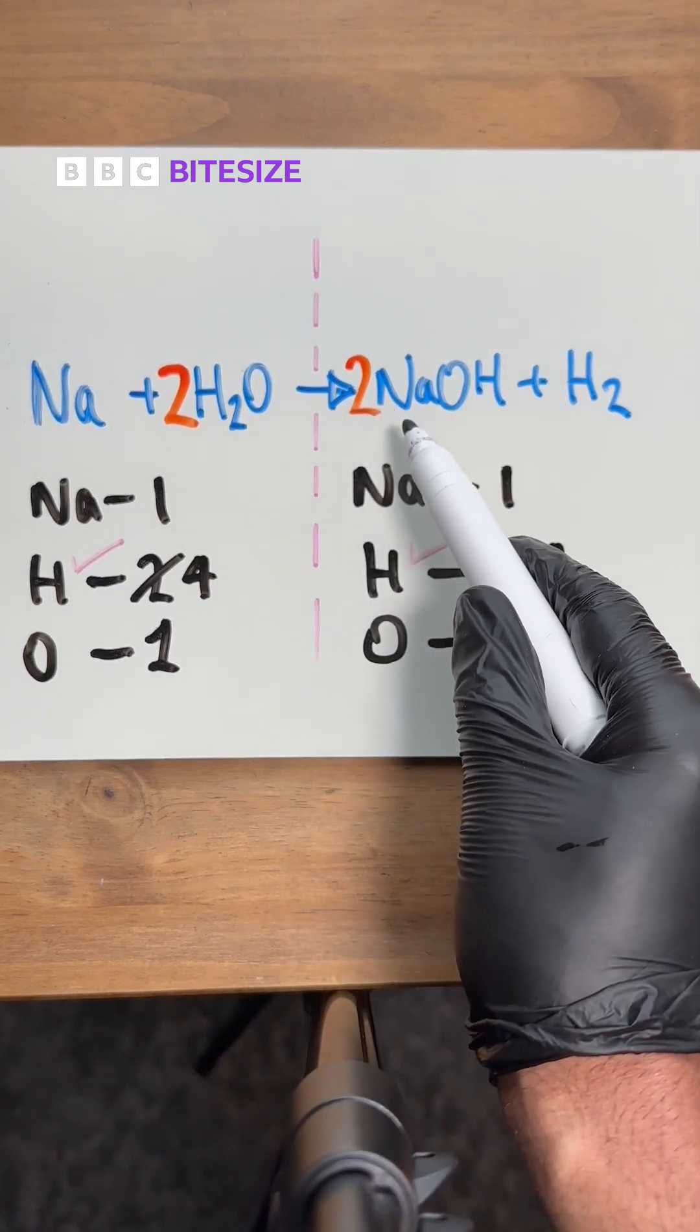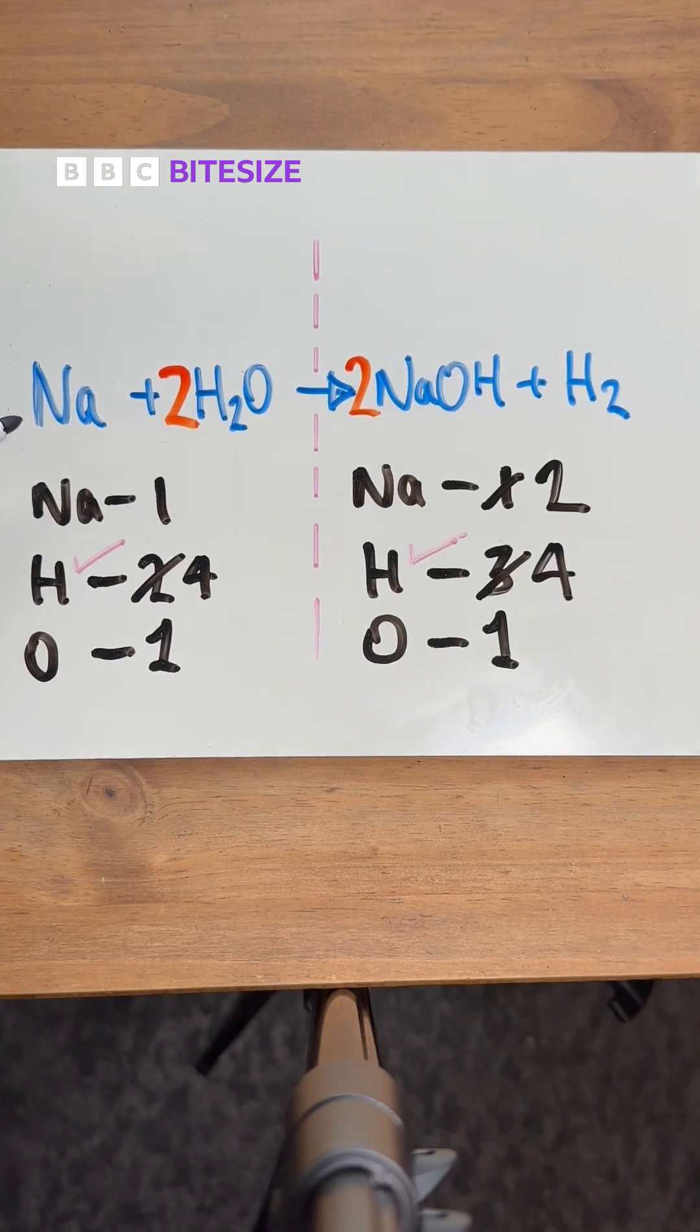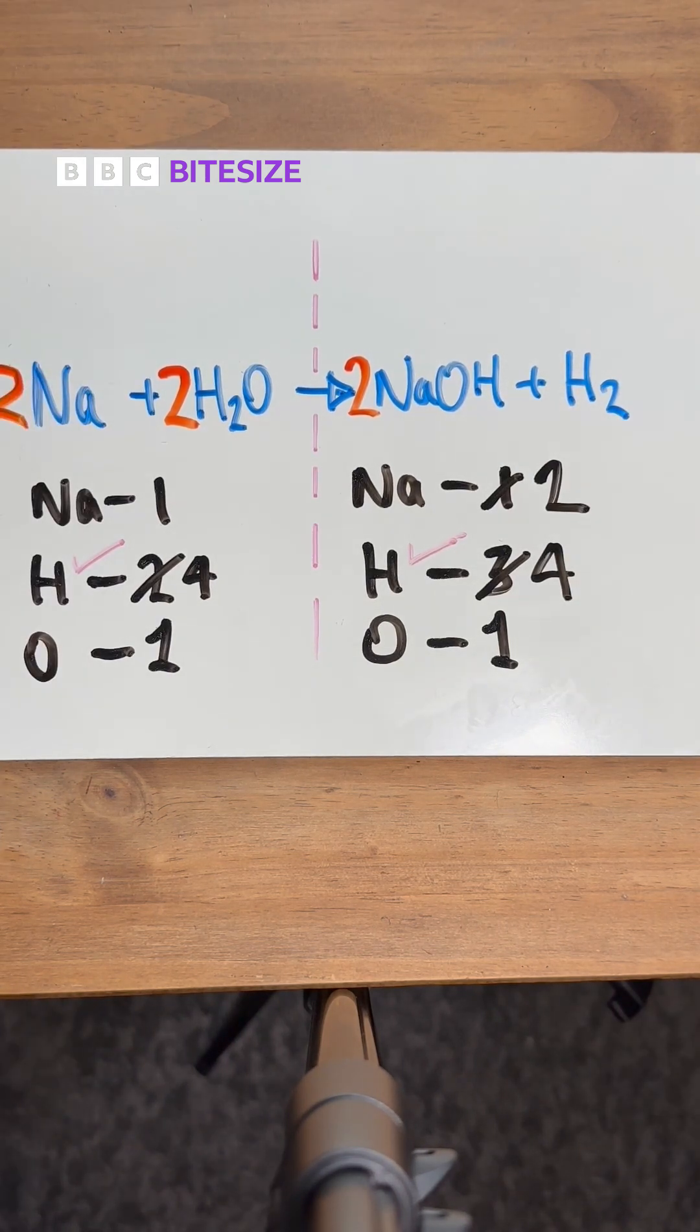But because I put a two in front of the NaOH, that means that the sodium on the right is now two, so I'll go update that. And also I have to make it the same on the left, so I put a two in front of that sodium as well to make it the same on each side. So sodium's balanced.